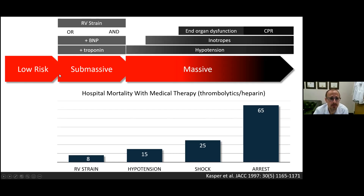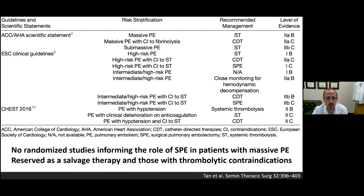Submassive PE patients can be categorized into high risk depending on evidence of RV strain and elevated biomarkers, but these people in general will have in-hospital mortality rates less than 10 percent, in the 8 percent range.